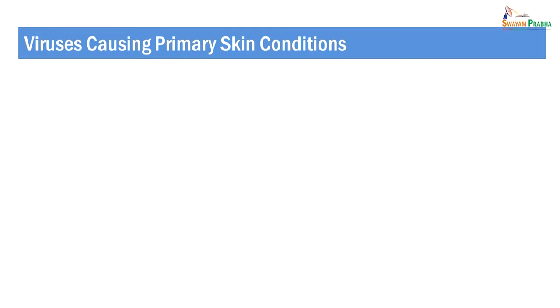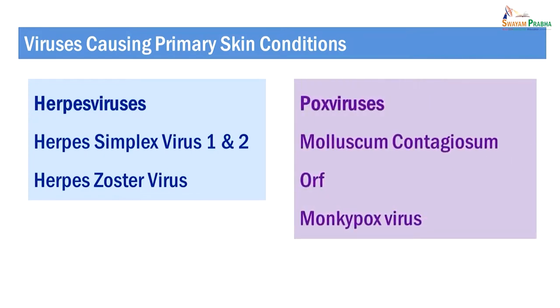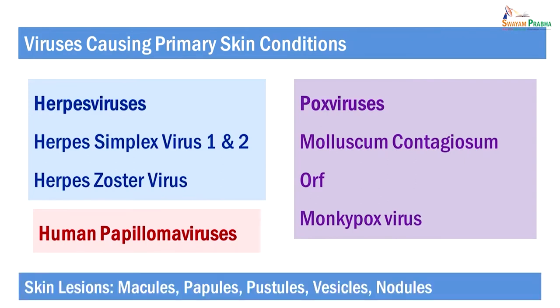The viruses causing primary skin conditions are all DNA viruses. Herpes viruses are an important group, including herpes simplex virus type 1 and 2 and herpes zoster virus. The second group is pox viruses, in which molluscum contagiosum and monkey pox virus are important causes. Thirdly, human papilloma viruses are important causes of primary skin conditions. Viral skin lesions appear in various forms — usually as macules, papules, pustules, vesicles, and nodules. Many times these lesions are distinctive, and etiological diagnosis is possible on the basis of cutaneous manifestations.